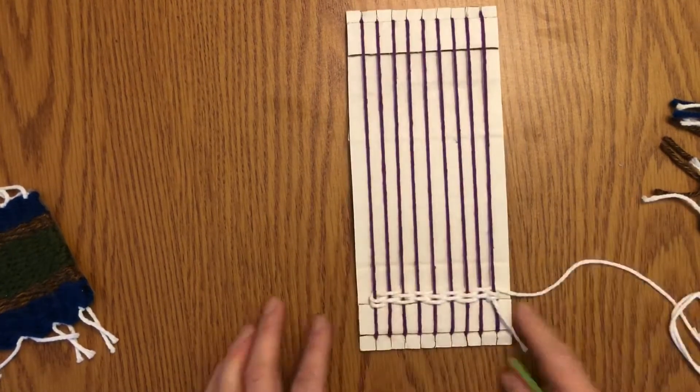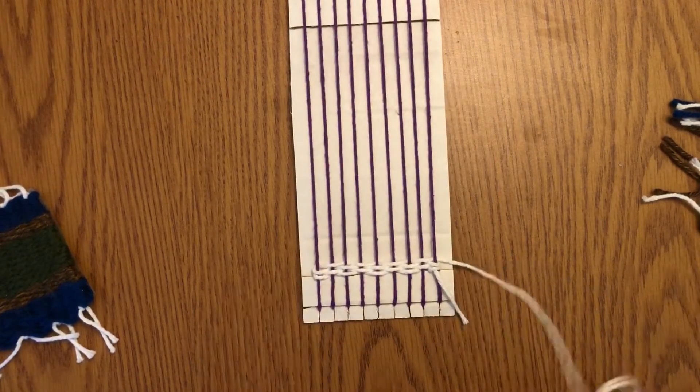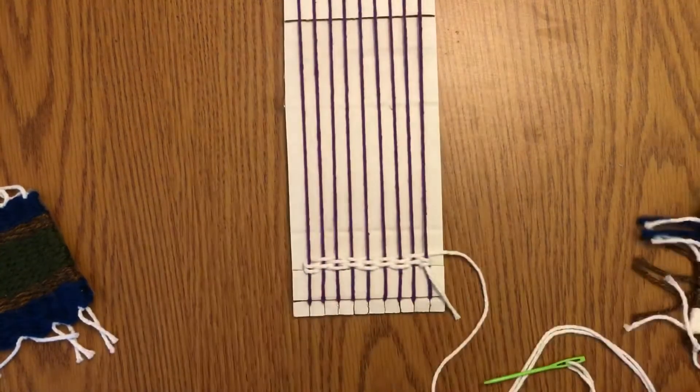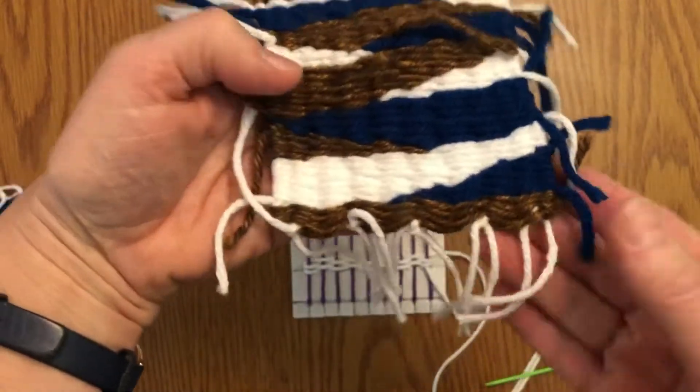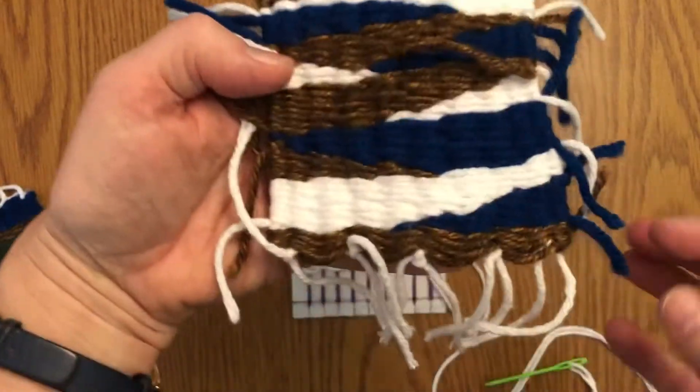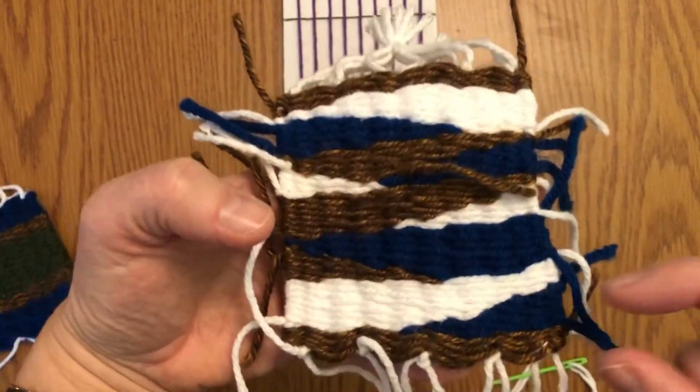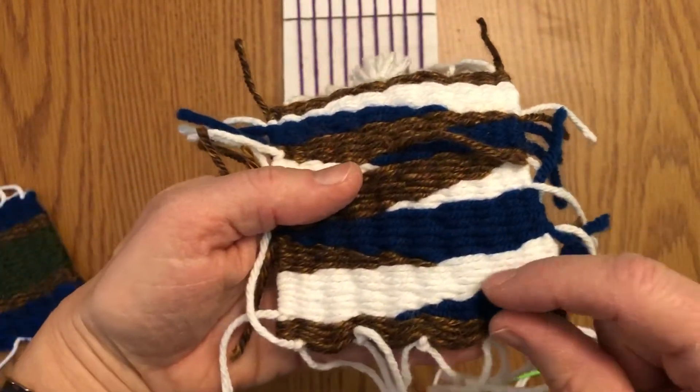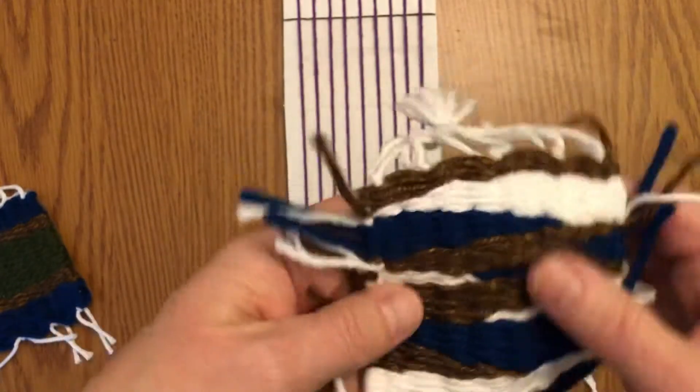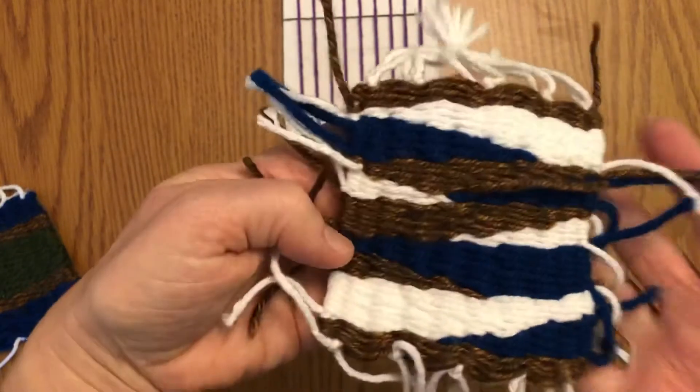Okay, so another thing I wanted to show you with this tabby weave that is kind of a cool thing to do—I have an example right here. This is with the tabby weave too, but you can see that some of the sections are making kind of a wedge shape. It's wider with this blue section right here, wider here and narrower there. Really all of the sections are kind of like that.